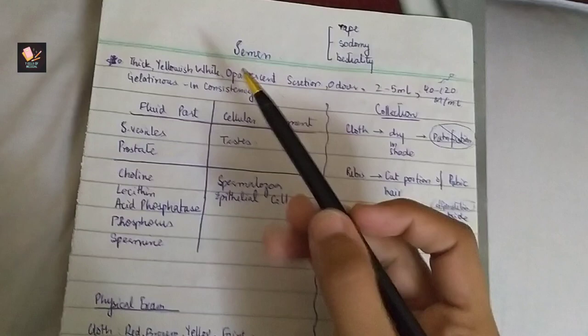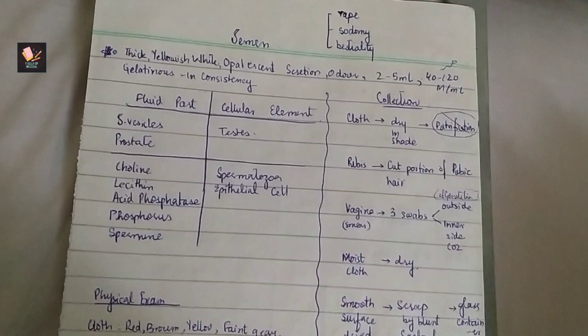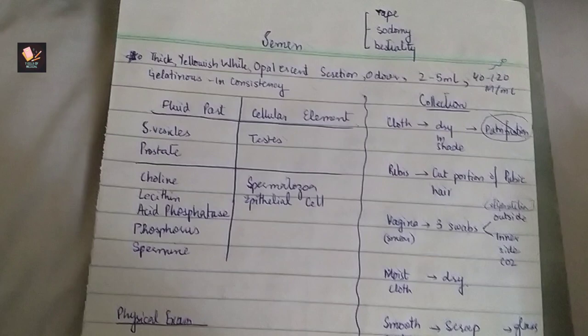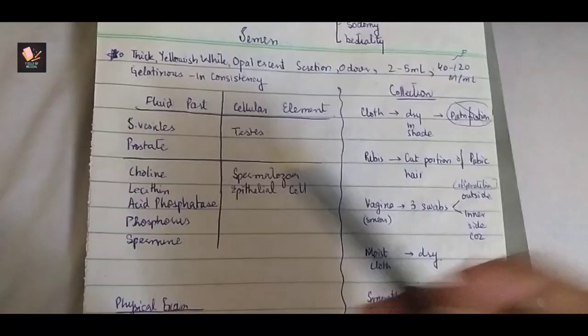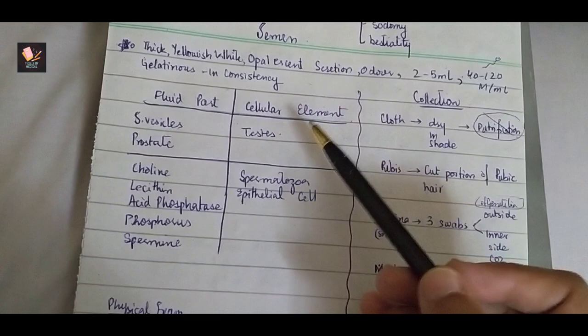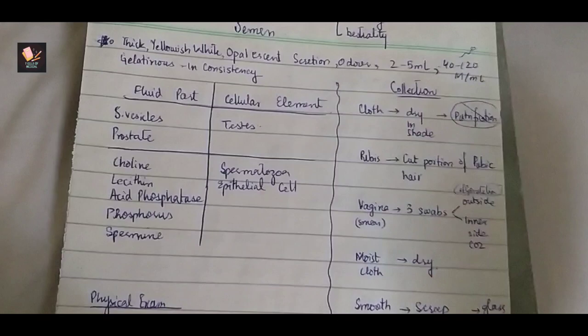Physical examination: thick, yellowish white or opalescent secretion with specific odor. It is gelatinous, volume is 2 to 5 ml, and it contains 40 to 120 million sperms per ml. There are 2 parts: a fluid part and a cellular element. The fluid part is seminal vesicle and prostate, and the cellular element is from testis.